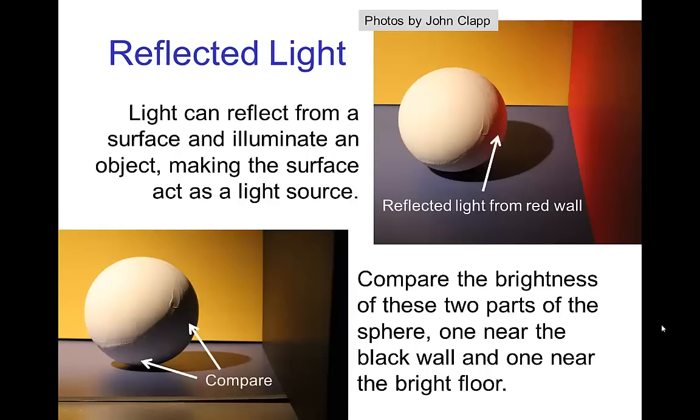Now, as I said, the source of ambient light is often the reflection off of various surfaces in the environment, and in these photos, you can see this effect of reflected light. So in the photo on the top, we have a sphere, and behind the sphere, if we only had the single spotlight shining on it and no reflected light, then it would be completely dark behind the sphere.